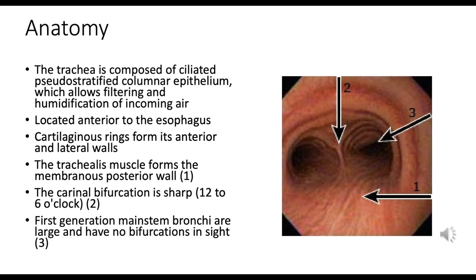The carina is a ridge of cartilage at the point where the trachea divides into the left and right main stem bronchi. The bifurcation angle is described as oriented from 12 o'clock or anterior to 6 o'clock or posterior. The trachea bifurcates into the right and left main stem bronchi — the first generation of the bronchial tree — which are relatively large and do not immediately bifurcate.